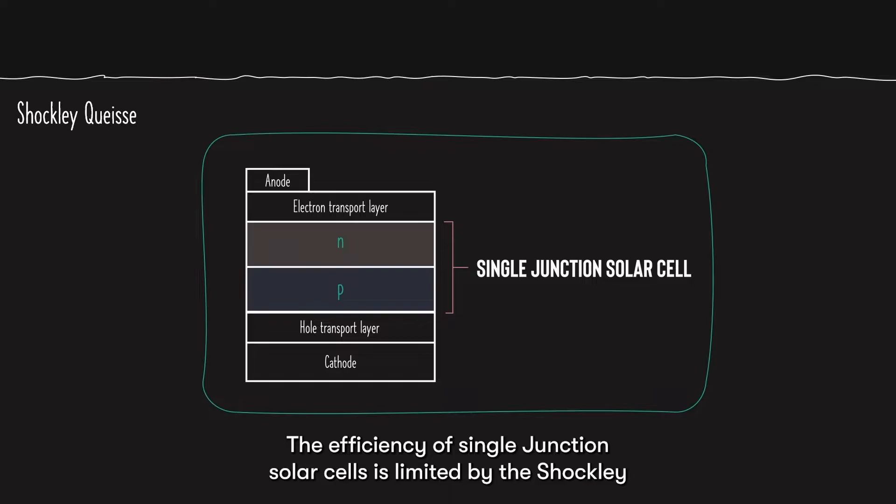The efficiency of single junction solar cells is limited by the Shockley-Queisser limit, due to the tradeoff between current and voltage. You can check out chapter 5.1 if you don't already know about this limit.